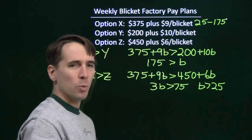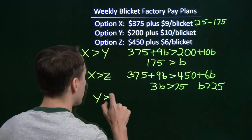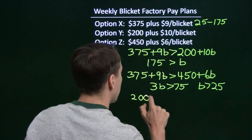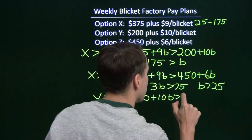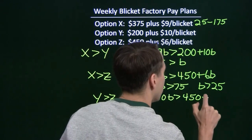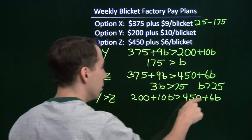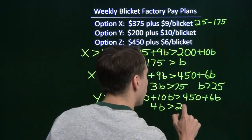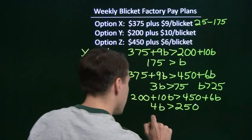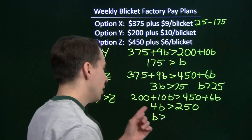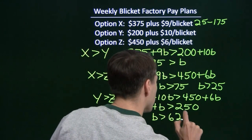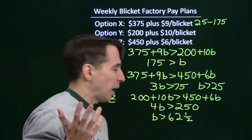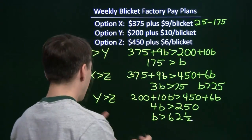But I still have to compare option Y and option Z. I want to see when option Y is better than option Z. Option Y is 200 plus 10B, and option Z is 450 plus 6B. We just isolate B — subtract 6B from both sides, leaving 4B on the left; subtract 200, leaving 250 on the right. Then divide both sides by 4 to isolate B. 4 goes into 250 to give 62 and 2 quarters, which is 62 and a half. So if I make more than 62 and a half blickets — and I don't even know what a blicket is, so how can I tell what half a blicket is — then option Y is better.